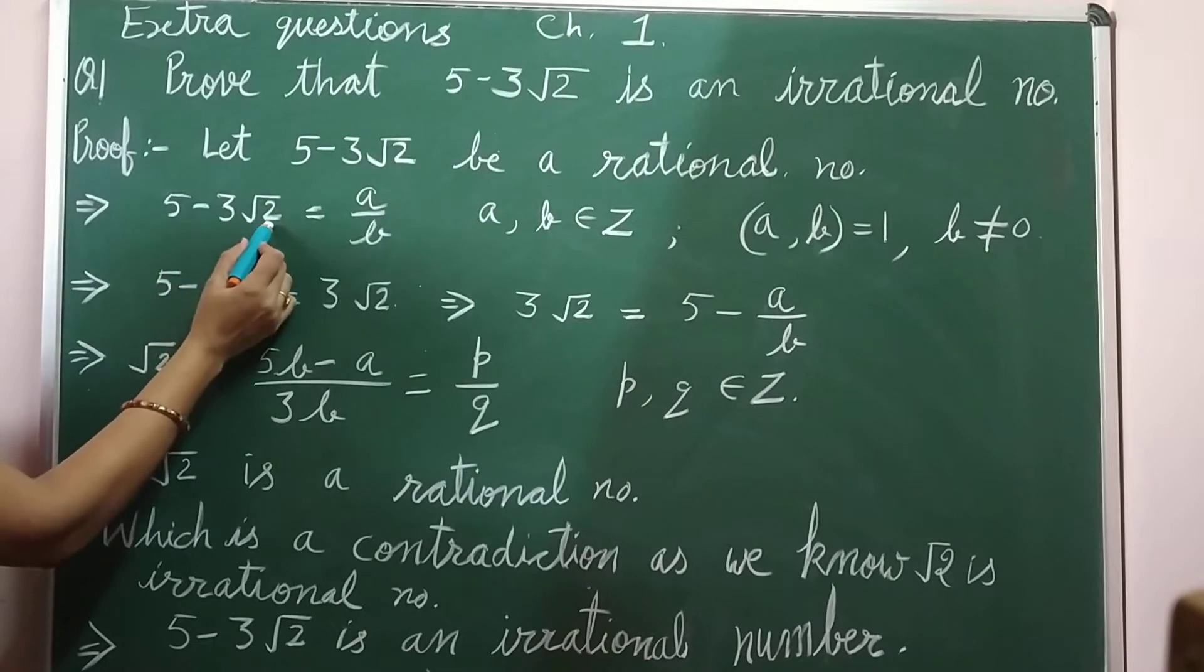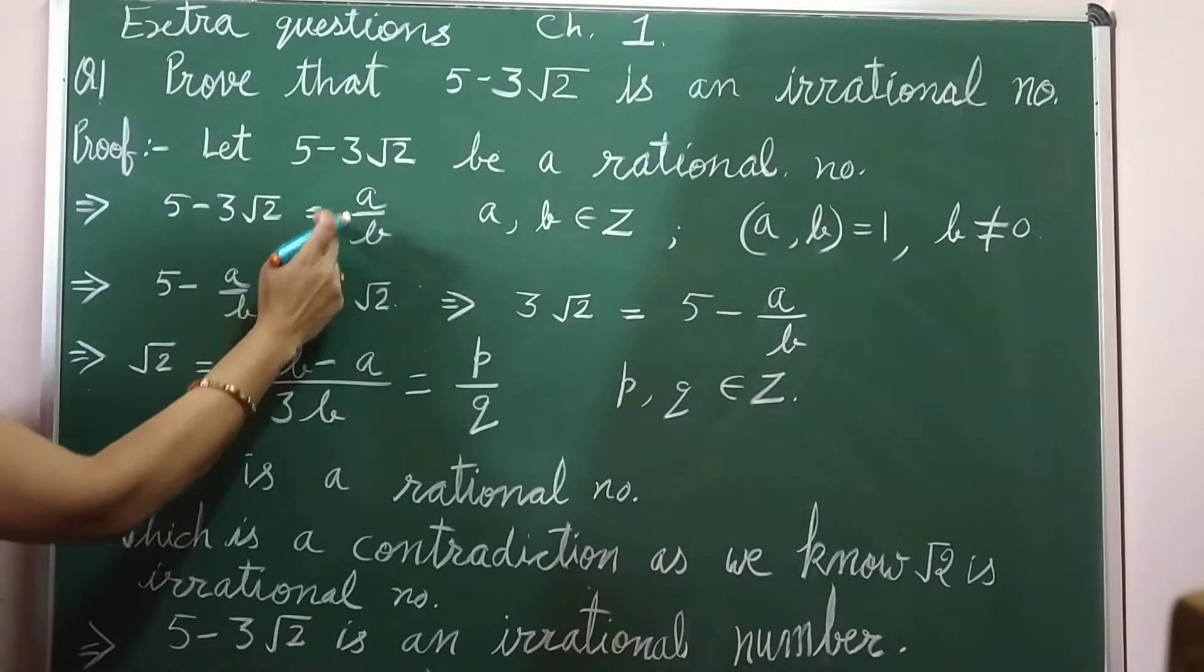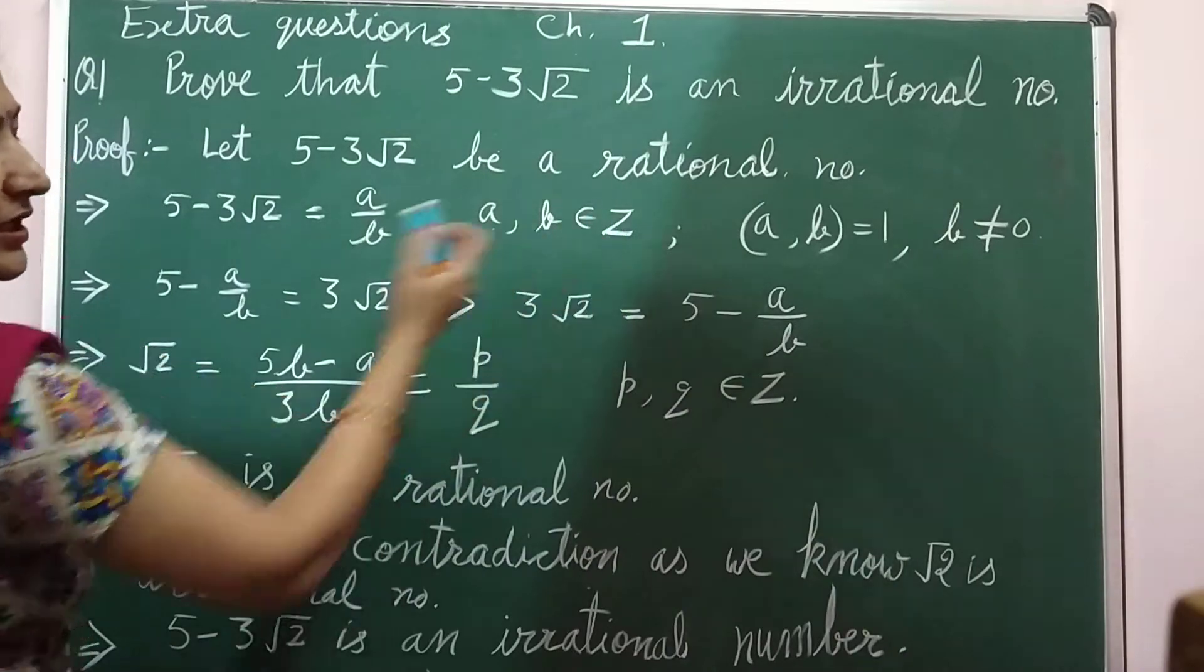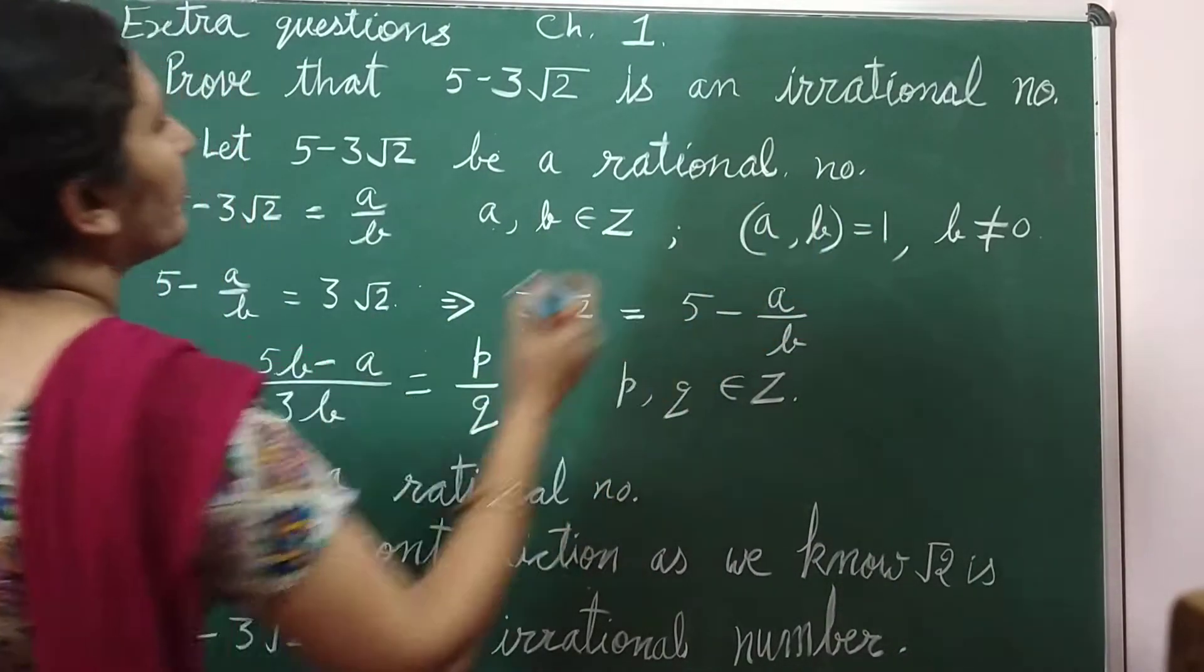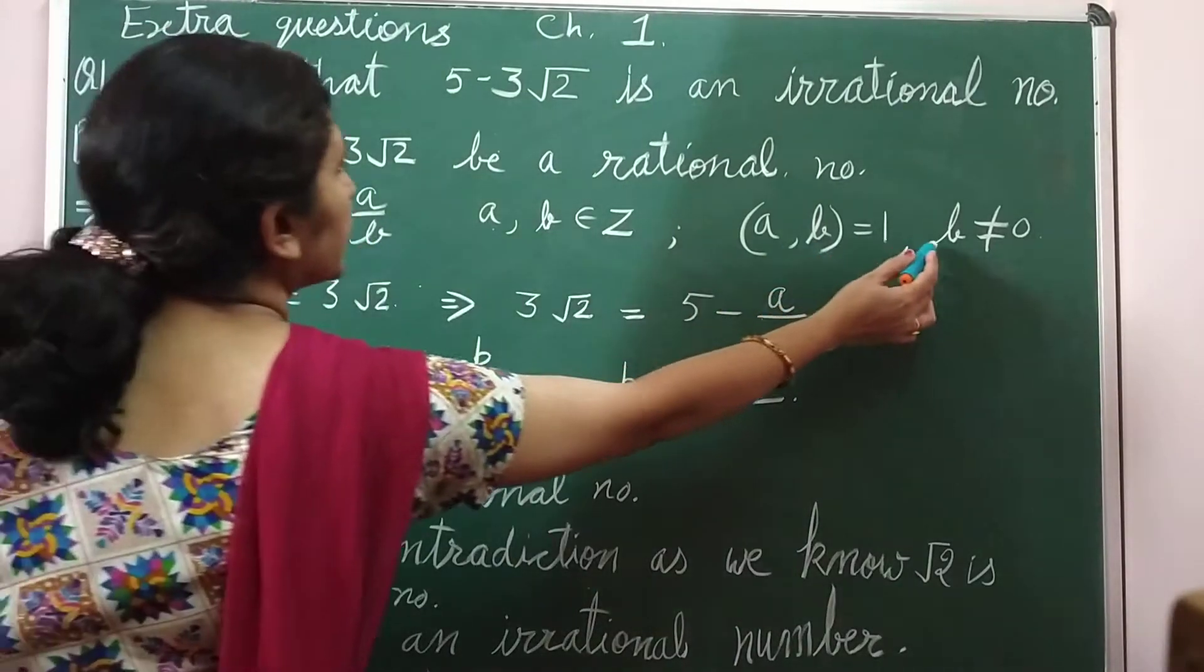Which implies 5 minus 3 root 2 is equal to a over b. It can be written in the form of a over b. So if it is a rational number, what are the properties? Both a and b should be integral values, and these are coprime numbers. a and b means their HCF is 1, and the denominator b is non-zero.